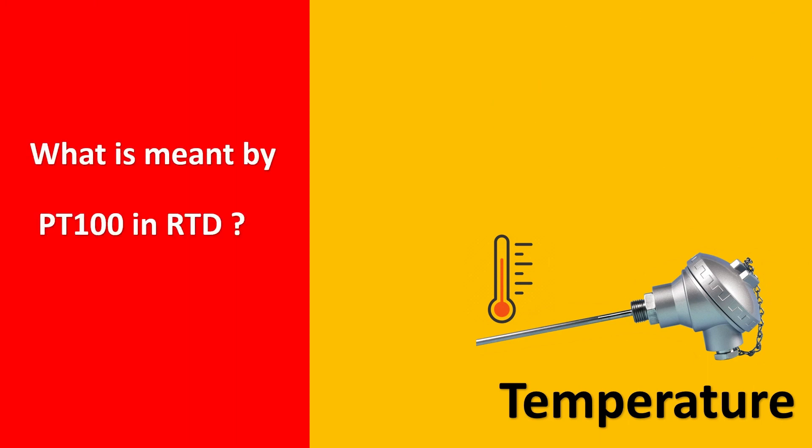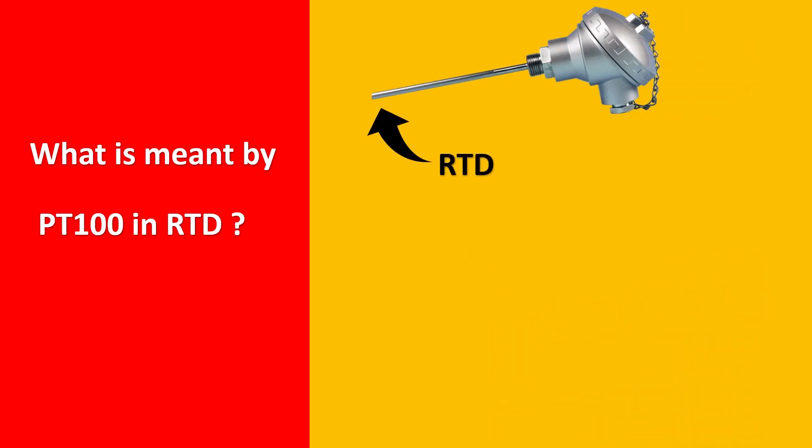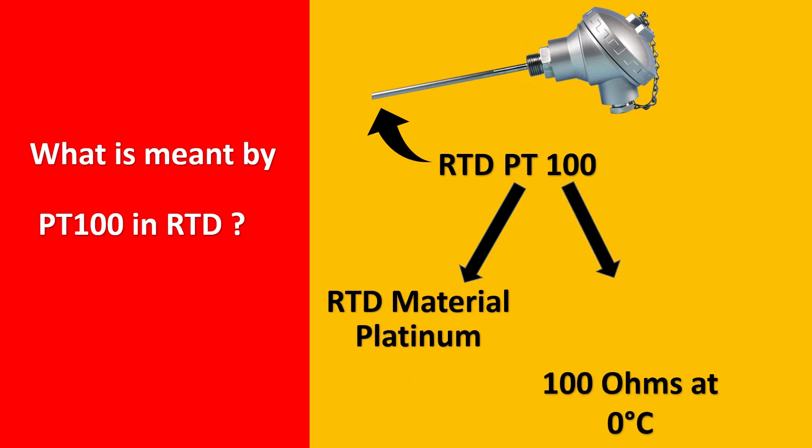But it has been asked a lot of times that is what is PT-100 in RTD? So in RTD, PT-100 is basically the PT stands for the material which is platinum and the 100 stands for 100 ohms at 0 degree Celsius.